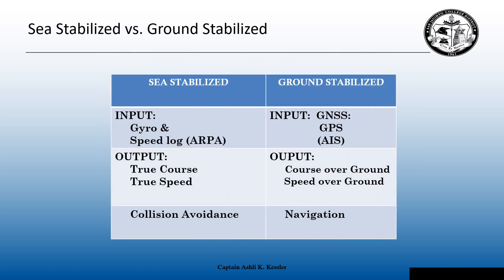Sea stabilized versus ground stabilized — their inputs, outputs, and what to use them for. For sea stabilized radars, the input is a gyro compass and a speed log for ARPA or true motion. The output gives us true courses and true speeds, and this is best used for collision avoidance. This is what the navigation rule book is based on — true courses and true speeds.